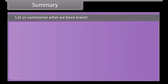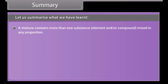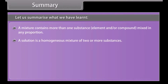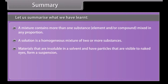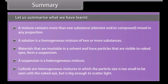Summary. A mixture contains more than one substance, element or compound, mixed in any proportion. A solution is a homogeneous mixture of two or more substances. Materials that are insoluble in a solvent and have particles visible to the naked eye form a suspension; a suspension is a heterogeneous mixture. Colloids are heterogeneous mixtures in which the particle size is too small to be seen with the naked eye but is big enough to scatter light.